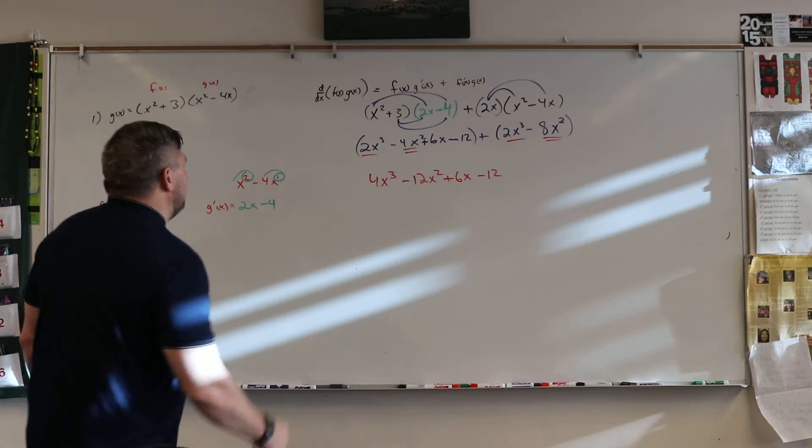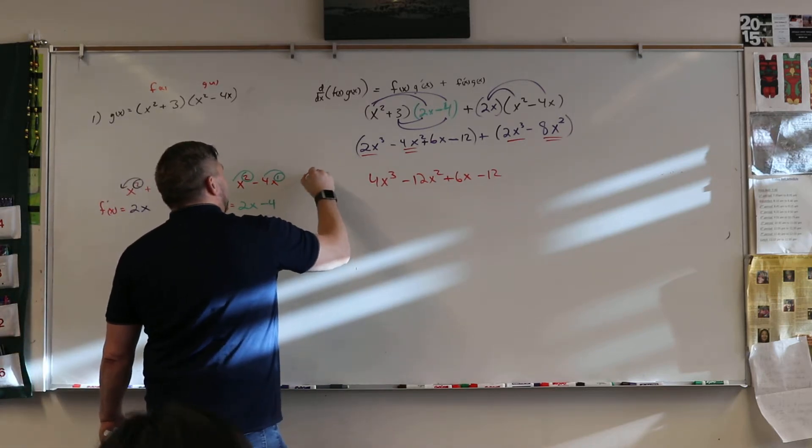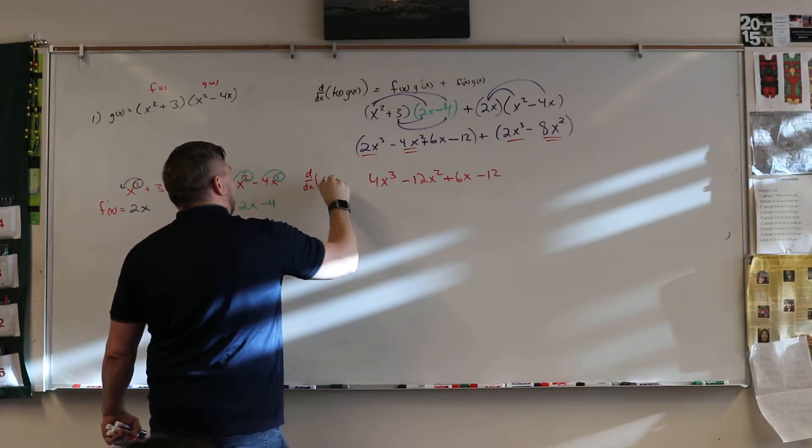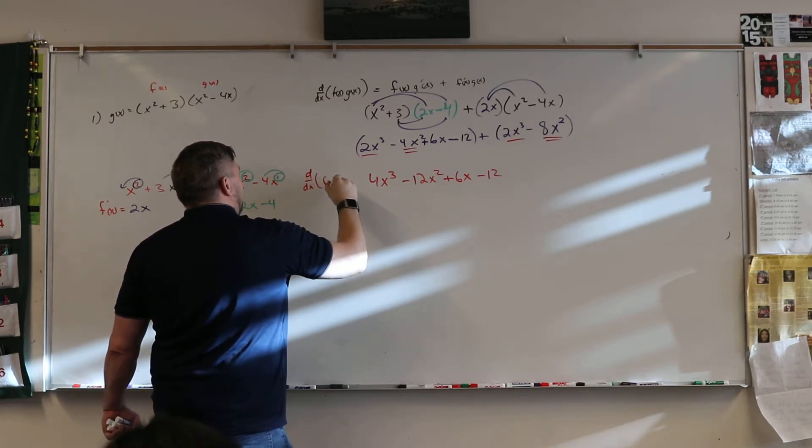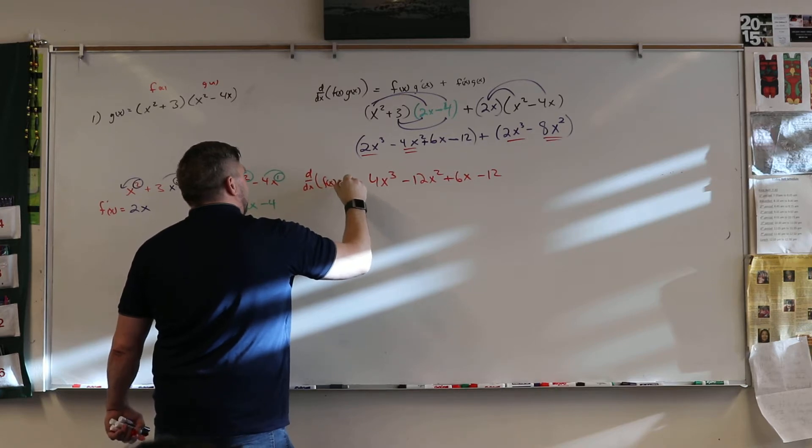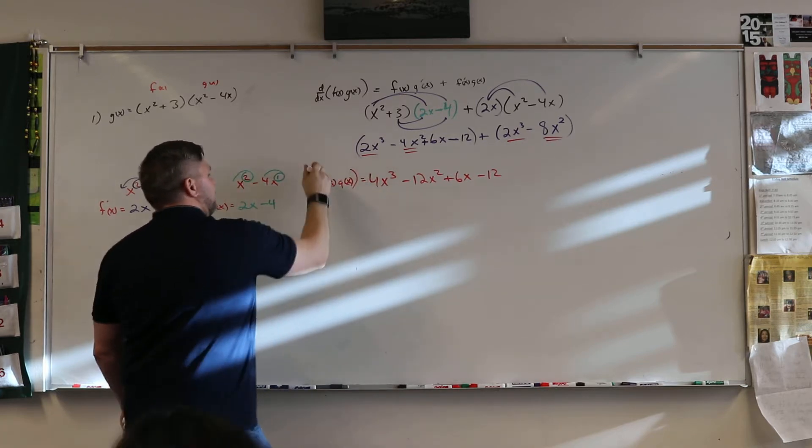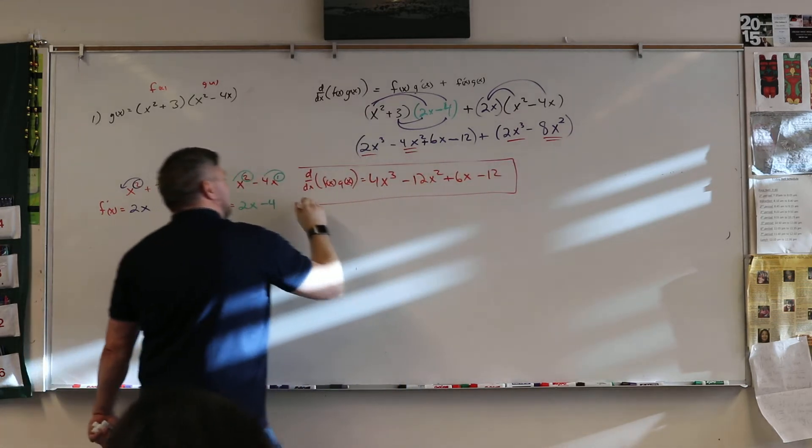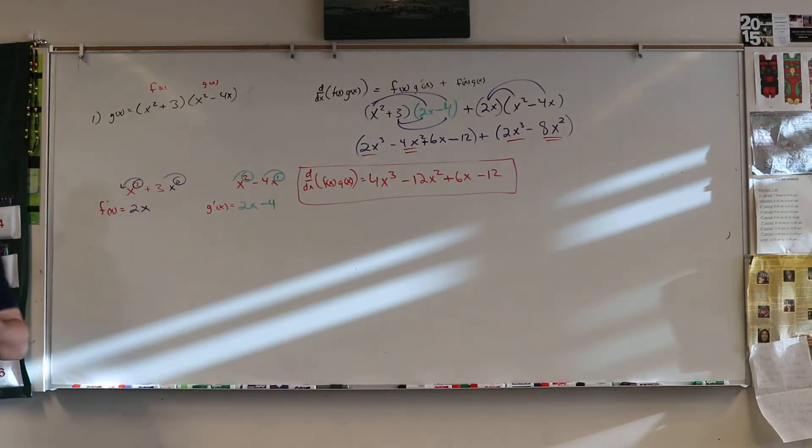It's all done. And so d over dx of f of x, g of x, is equal to this. And that's the answer. That's easy. Not bad, right?